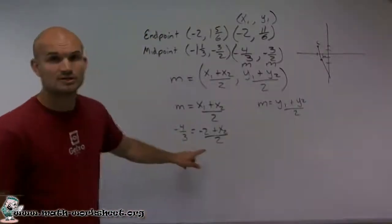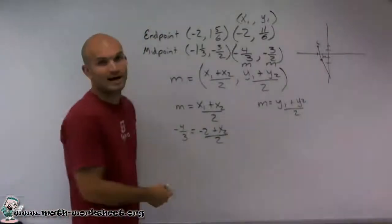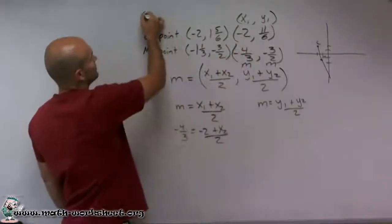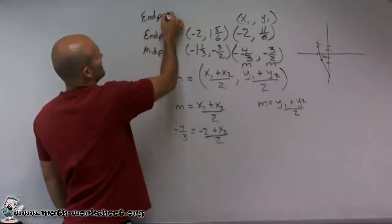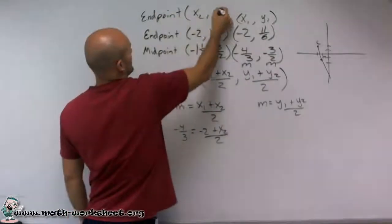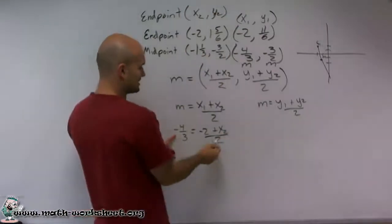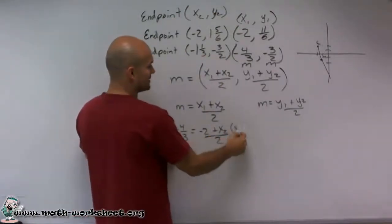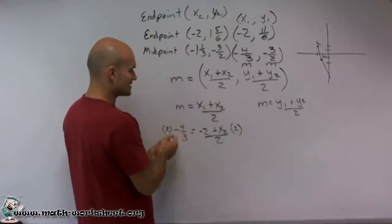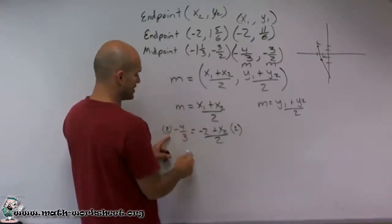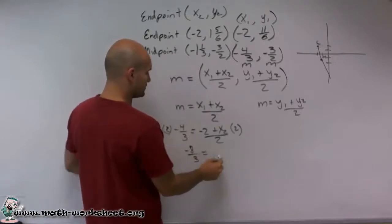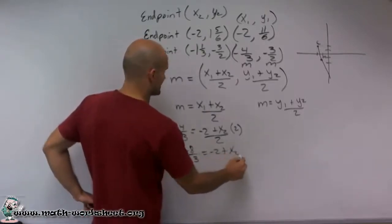So now what I'm going to have to do to solve this equation is just solve for x2 or the x value of my endpoint, which is my other point. So my endpoint that I'm going to try to find. Here's the other endpoint. It's going to be x2 comma y2. So therefore, to solve for this, I first need to get rid of the denominator. So I'll multiply by 2 on both sides. 2 times your fraction, you just multiply 2 times your numerator would give me negative 8/3 equals negative 2 plus x2.